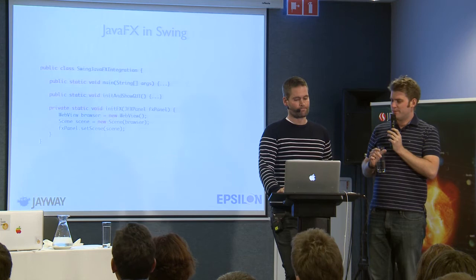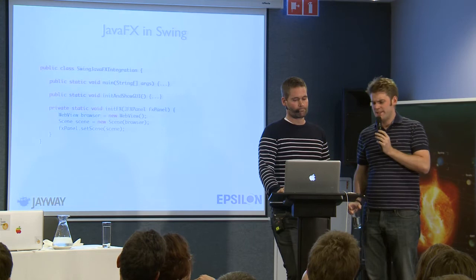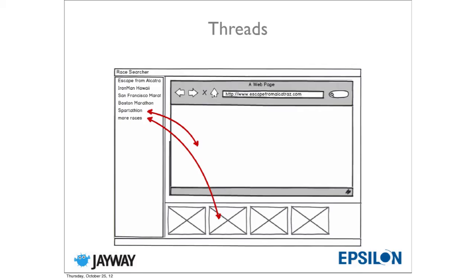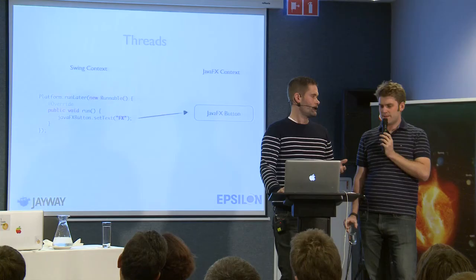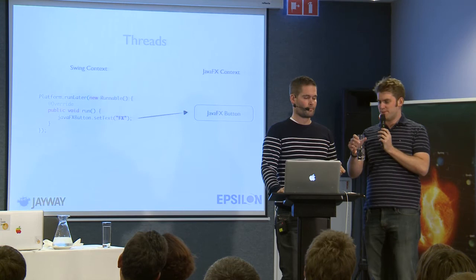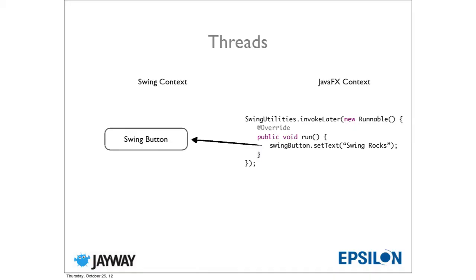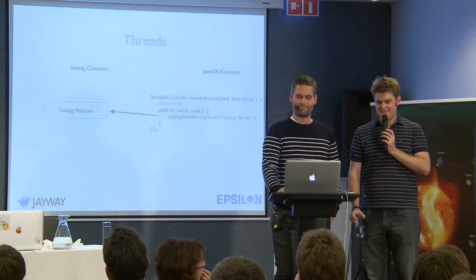So instead of a Stage we have a JFXPanel — you can reuse any part of JavaFX within that panel inside Swing. Regarding threading: if you're in a Swing context and want to update something in JavaFX, you invoke Platform.runLater. To go from JavaFX back into Swing, you use SwingUtilities.invokeLater as you always should.